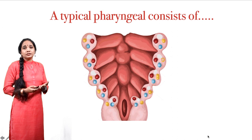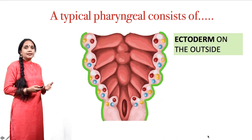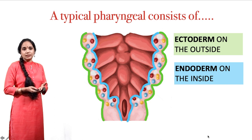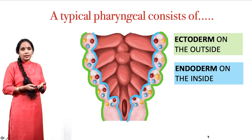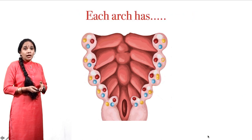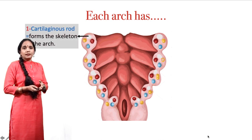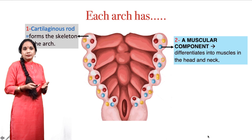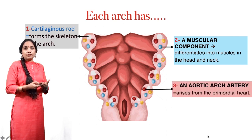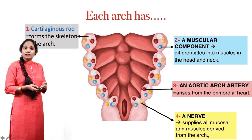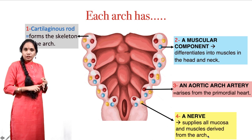A typical pharyngeal arch consists of four structures. It is lined on the outside by the ectoderm and on the inside by the endoderm lining the pharyngeal cavity. In between is the mesodermal core. Each arch has: a cartilaginous rod which forms the skeleton of the arch, a muscular component which gives rise to a muscle, an aortic arch artery which supplies blood to the components within the arch, and a nerve which supplies all structures developing from that arch.